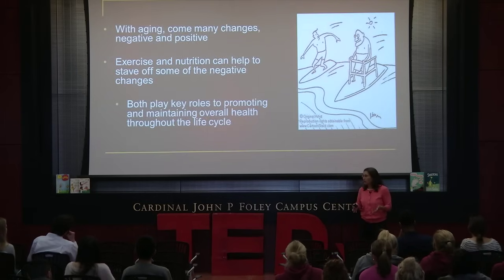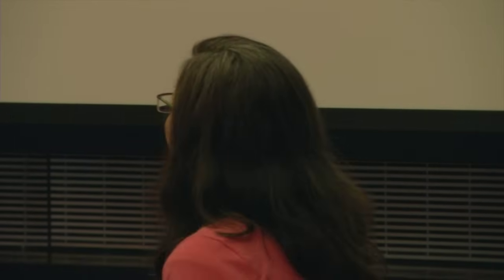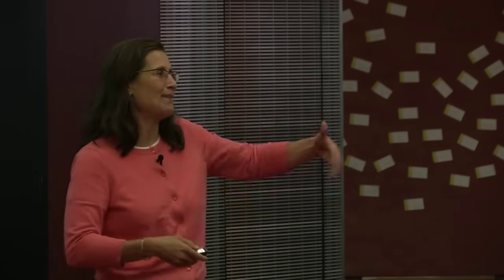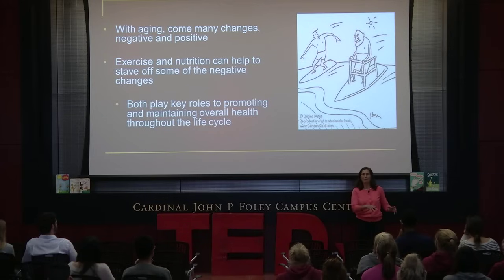So with aging, and all of us are aging, that's one thing we can't actually stop, there are things that are negative and positive that occur in our bodies. And both nutrition and exercise play a key role in preventing some of the things that occur with aging. And one thing I'd like to make sure I say is that aging is not a disease. So often people say, well, I'm older now, and I can't do this or that. And I really like to say that I think it's because maybe they got old too fast. So we shouldn't be stopping doing things just because we're getting older.